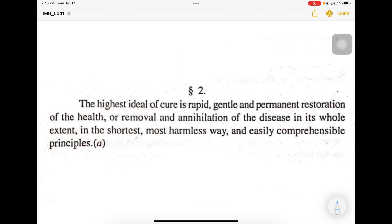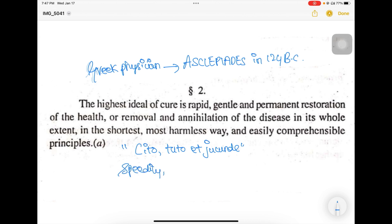Here, I would also like to add a high yield point, which is useful for our PG exams. The criteria for an ideal cure was actually first stated or advocated by a Greek physician named Asclepius in 124 BC. So he gives this statement: cito, tuto, et jucunde, which means a disease should be treated speedily, safely and agreeably.